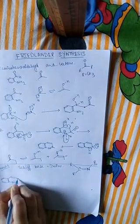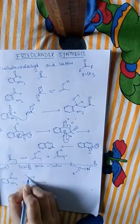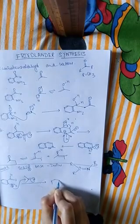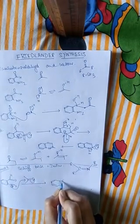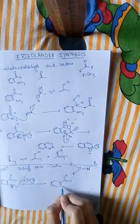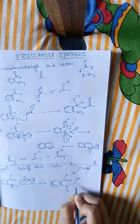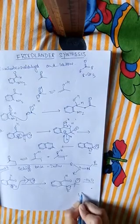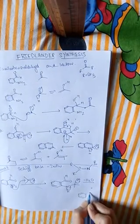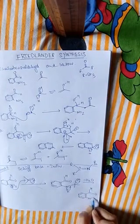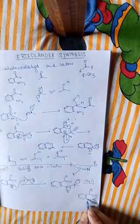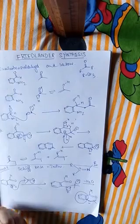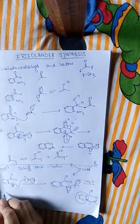In mechanism two, a Schiff base forms by the reaction of 2-aminobenzaldehyde with acetone. The lone pair of nitrogen attacks the carbonyl carbon, and first we get an imine with two CH3 groups present. The hydrogen breaks and the OH releases as H2O, giving us an imine with a nitrogen double bond. Since a phenyl group is attached to this nitrogen, it can be called a Schiff base.